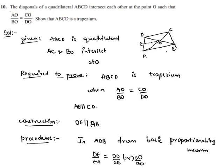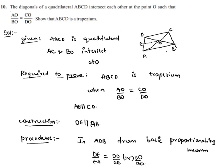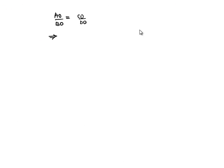Now if we consider the given statement that AO by BO is equal to CO by DO, which implies this can be written in the form DO by BO is equal to CO by AO.